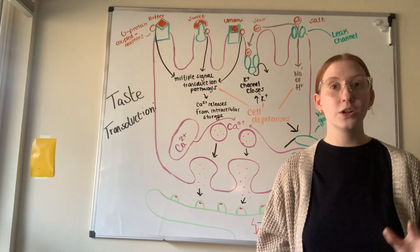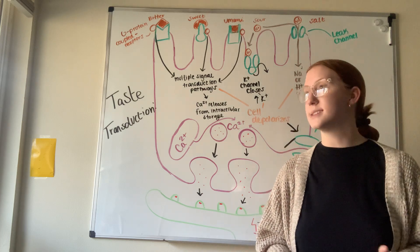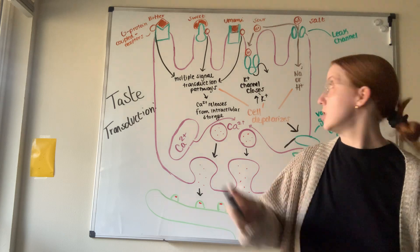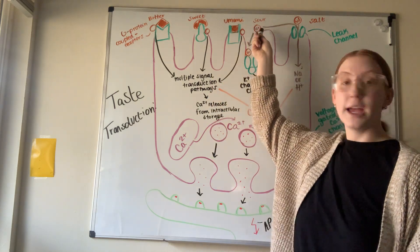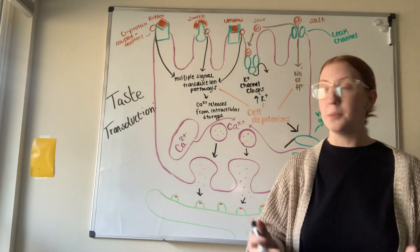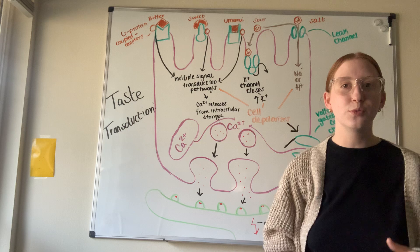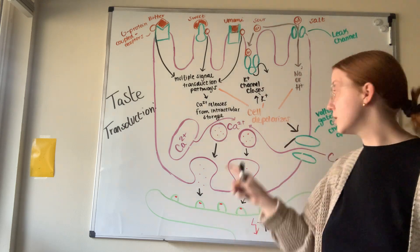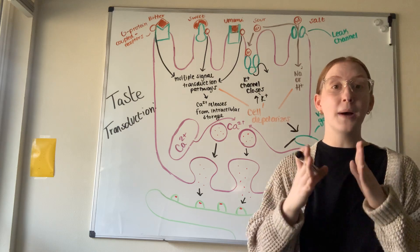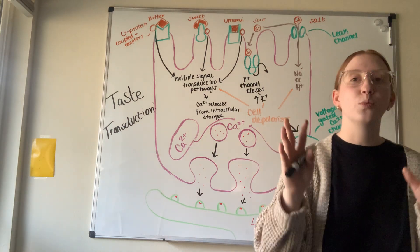Now we're going to look at sour. Sour is an acid; acids are made up of hydrogen ions that are positively charged. Here's my sour H+ ion — if hydrogen ions come in, the inside will become more positive, depolarizing the cell. If it makes the cell more positive, calcium-gated channels open.